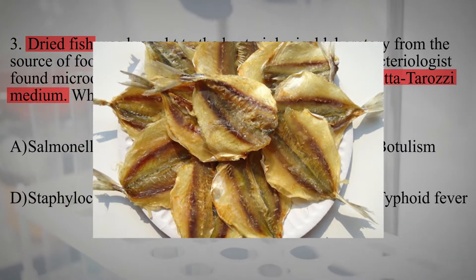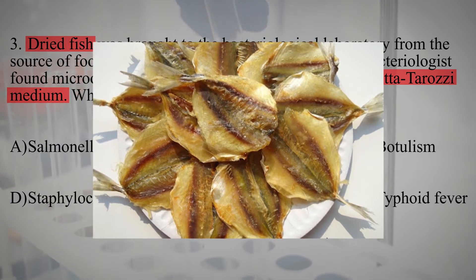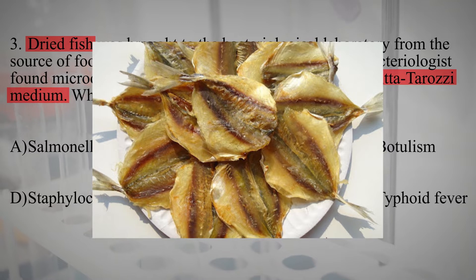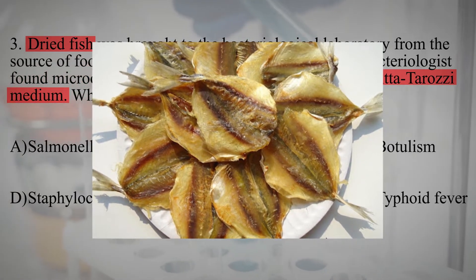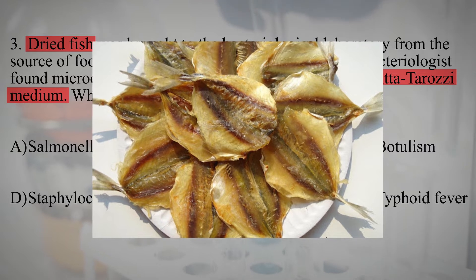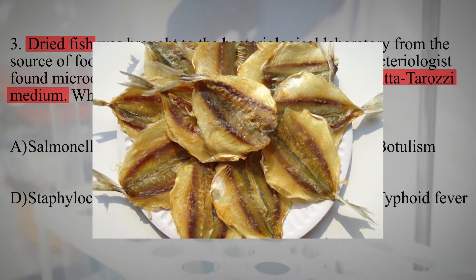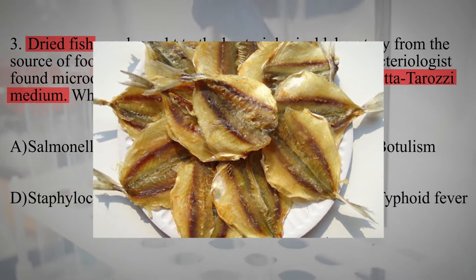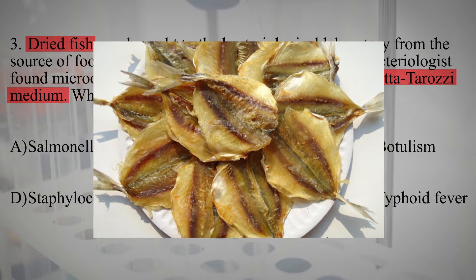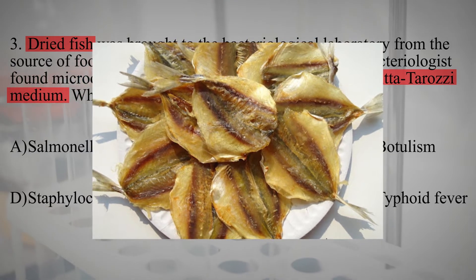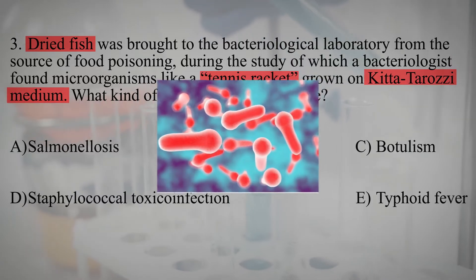Spores enter the intestines of fish with silted and polluted water, and in the process of evisceration, they seed the edible parts of the fish. If the fish is kept warm for some time before salting or at the beginning of salting, the spores germinate and the causative agents of botulism begin to release toxin.